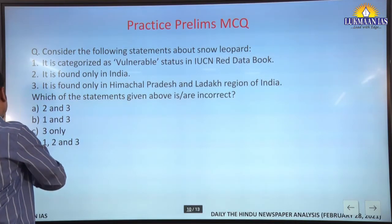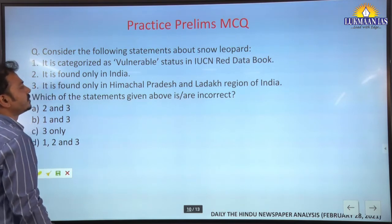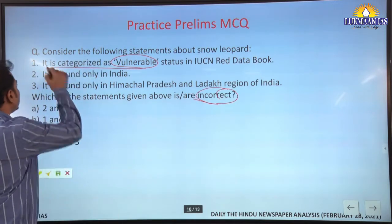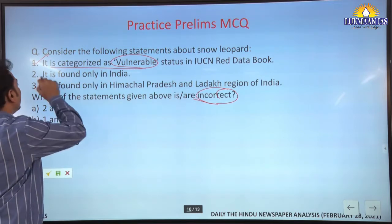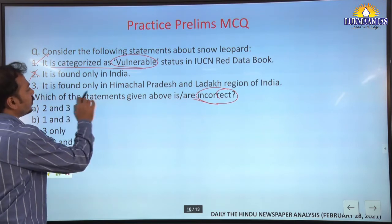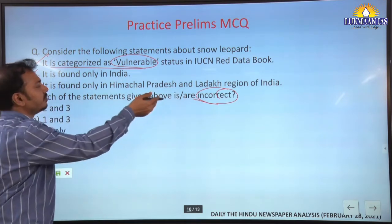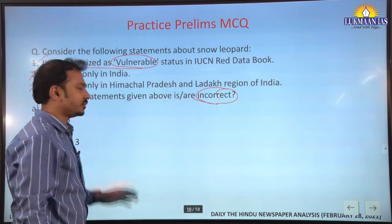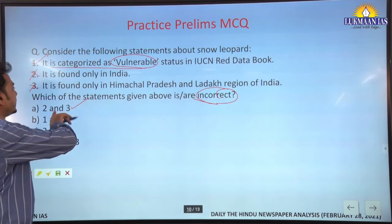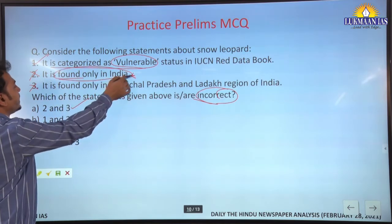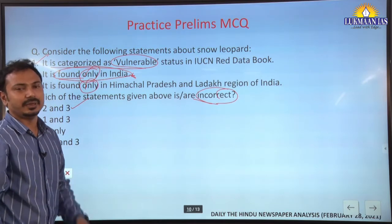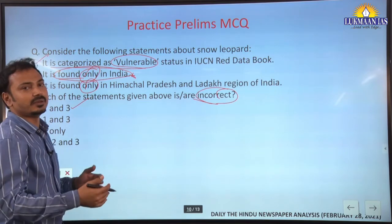The snow leopard is also known as 'ounce' and belongs to the cat family. For Prelims MCQ practice: UPSC generally gives statement-based questions about the snow leopard. Statement — it is characterized as Vulnerable: correct. Statement — it is found only in India: incorrect, it is also found in Afghanistan, Pakistan, China, Siberia, and the Tibetan region. Statement — it is found only in Himachal Pradesh and Ladakh in India: incorrect, it is also found in Sikkim, Uttarakhand, and Arunachal Pradesh. When a statement uses the word 'only,' the answer is largely incorrect.